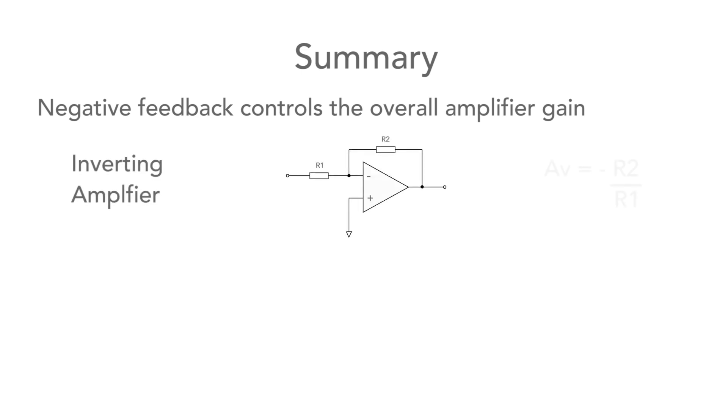So in summary, we can see that the negative feedback controls the gain of the circuit. For an inverting amplifier, the gain is minus R2 upon R1, and for a non-inverting amplifier, the gain is 1 plus R2 upon R1.